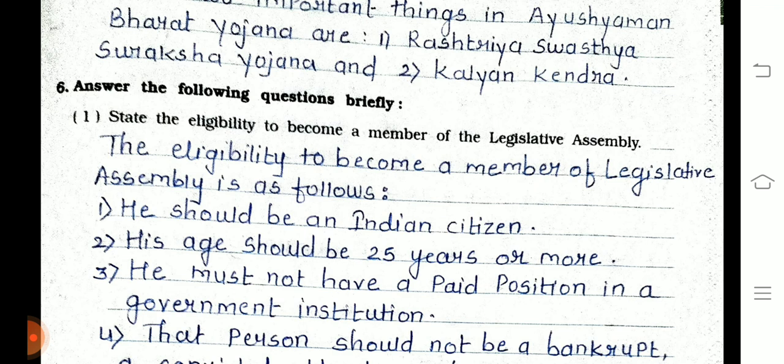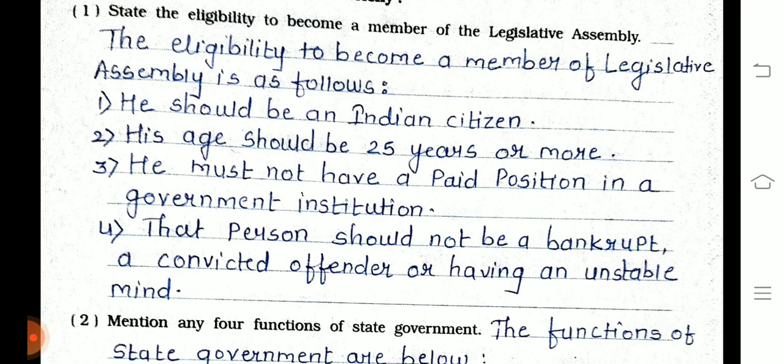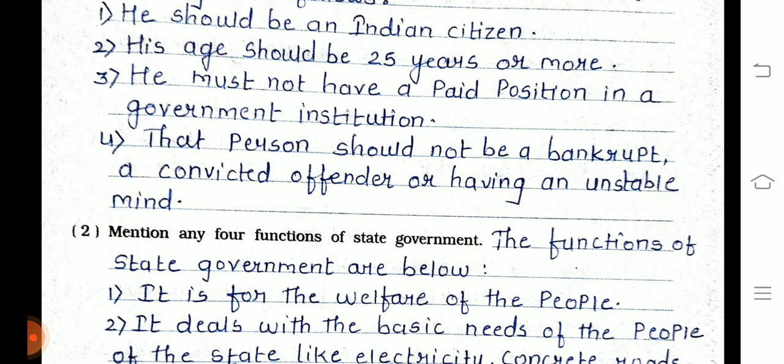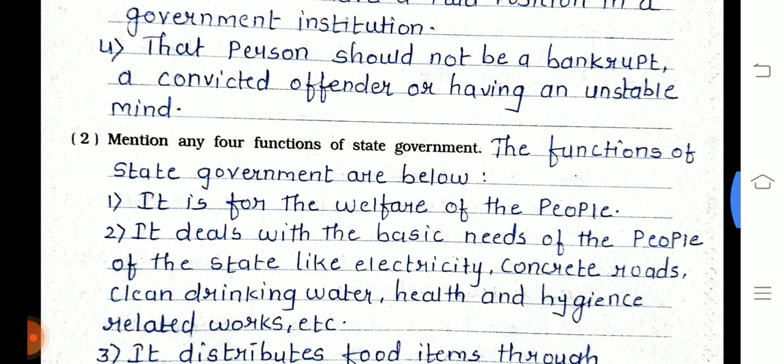Question 6, part 1: State the eligibility to become a member of the legislative assembly. The eligibility is as follows: he should be an Indian citizen; his age should be 25 years or more; he must not hold a paid position in a government institution; and that person should not be a bankrupt, convicted, or having an unstable mind.